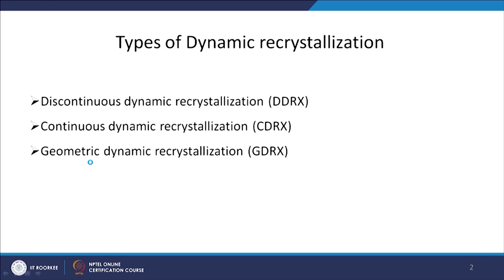Basically, there can be three types of dynamic recrystallization which we will be covering one by one. Discontinuous dynamic recrystallization is the first one, then the next one is continuous dynamic recrystallization and geometric dynamic recrystallization. Most of the studies and numerical or analytical modeling is done on discontinuous dynamic recrystallization, as it was initially the most important microstructural change people saw and understood. Continuous dynamic recrystallization is the later addition, and we will try to understand why it has now become important.